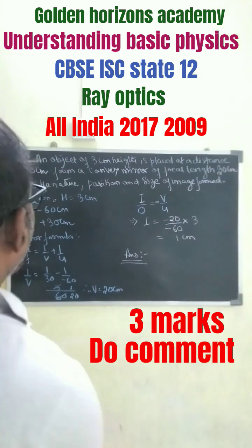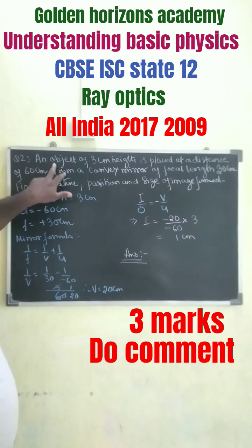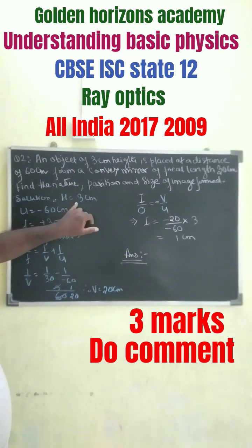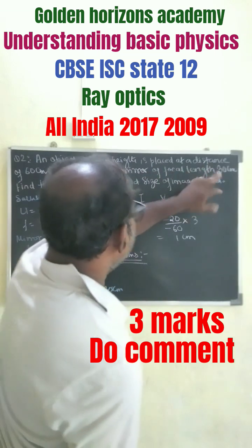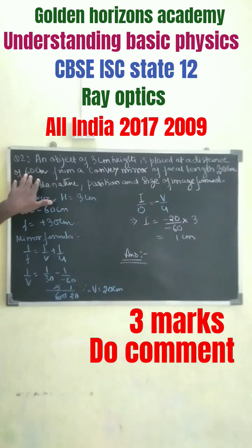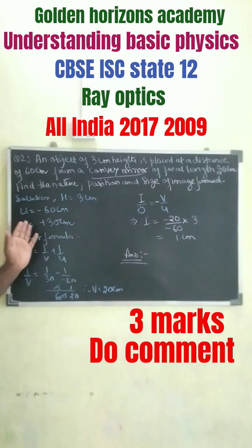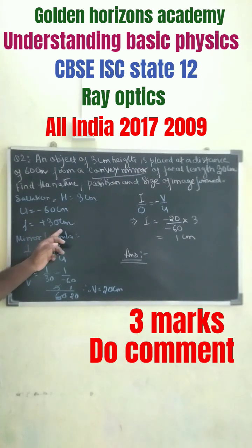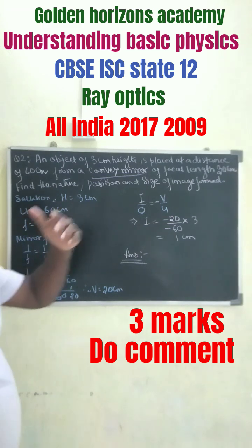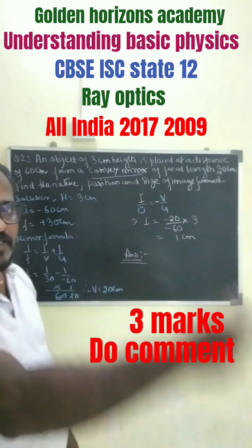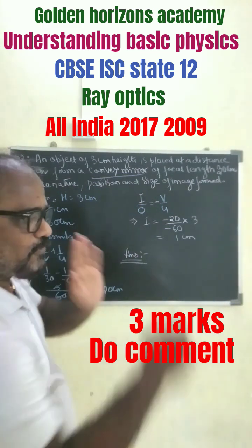Now we have one more question. An object of 3 centimeter height is placed at a distance of 60 centimeters from a convex mirror. So u equals minus 60 centimeters and f equals plus 30 centimeters, since for a convex mirror the focal length is positive, on the same side as the pole.